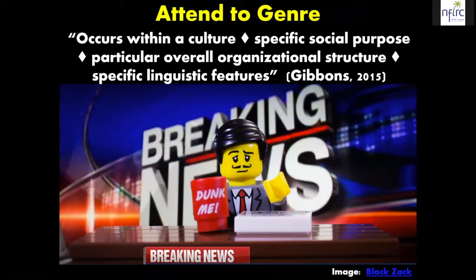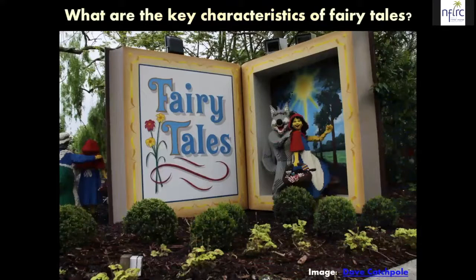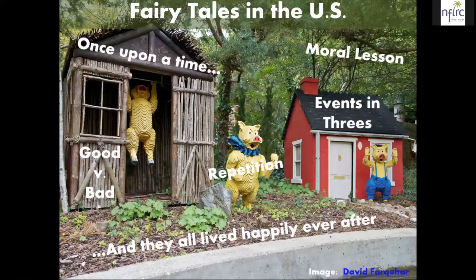Another thing I can scaffold is genre. Genre occurs within cultures for different social purposes, and they generally have specific structural and linguistic features. For example, if I were to ask you for the key characteristics of a fairy tale, most of you could tell me: they start with 'once upon a time,' they end with 'and they all lived happily ever after,' there is a good character and a bad character, there's repetition, things happen in threes, and there's usually a moral lesson. Knowing those things makes it easier to understand when you're reading a fairy tale because you have some structure, it helps you predict what's going to happen next, and it helps you keep track of where you are in the text.